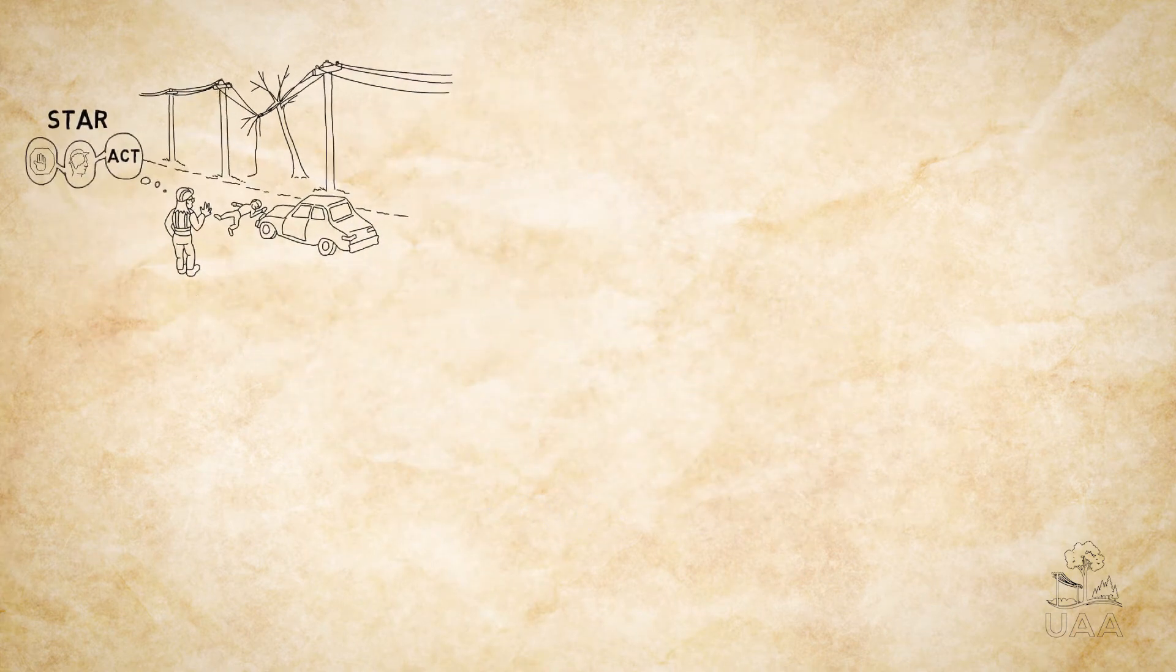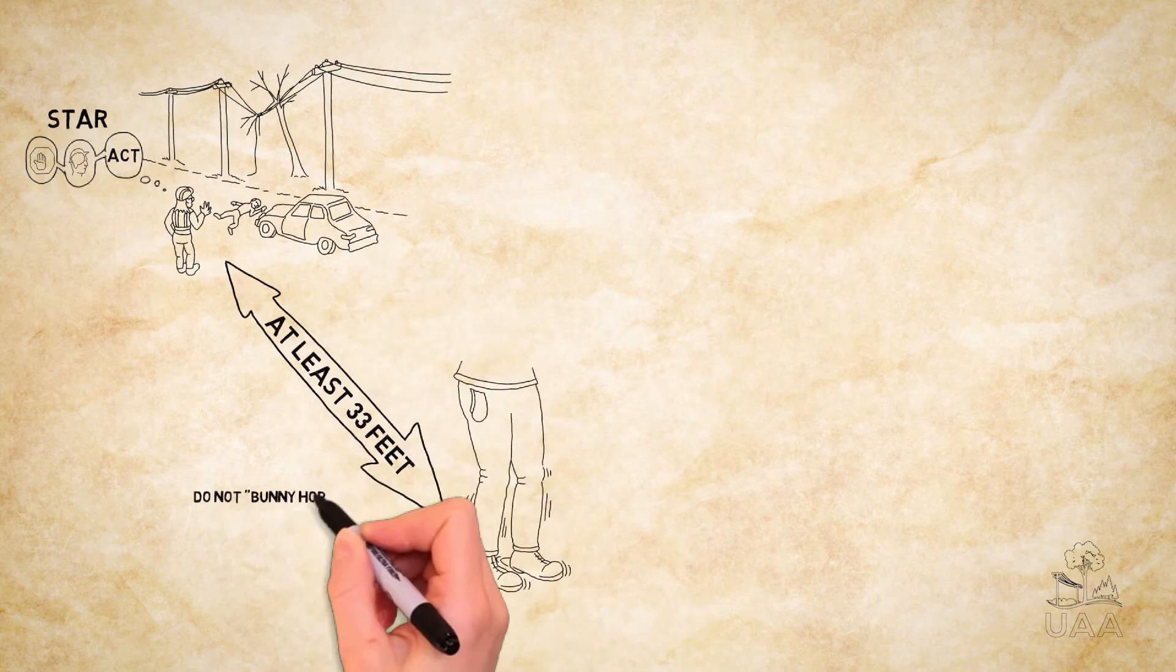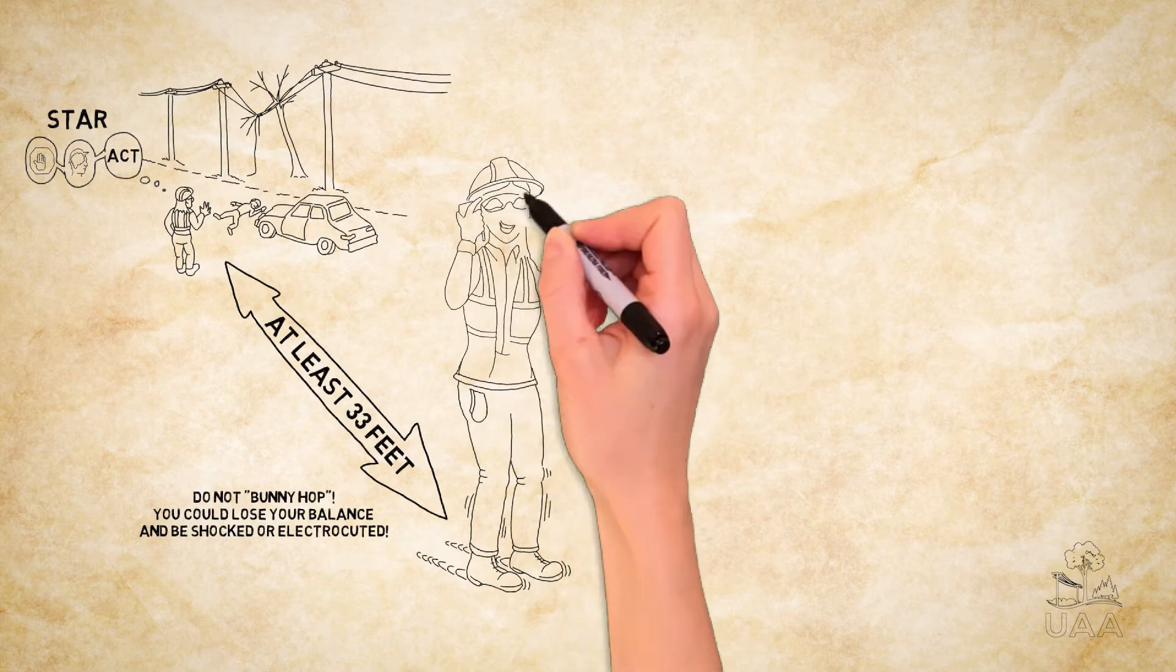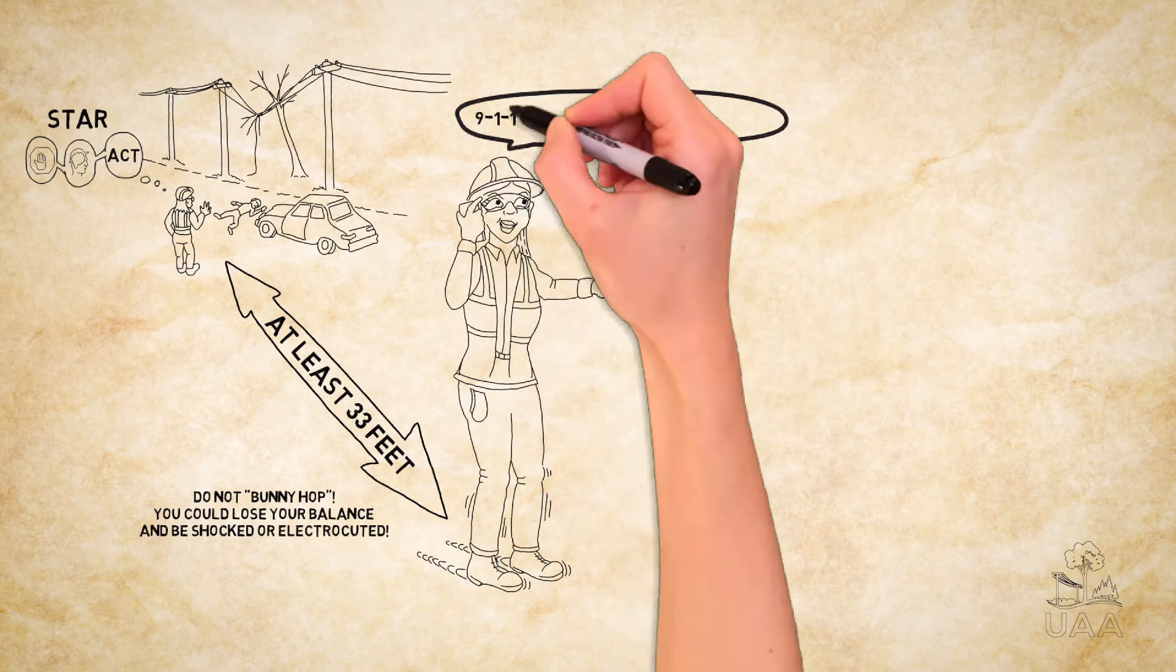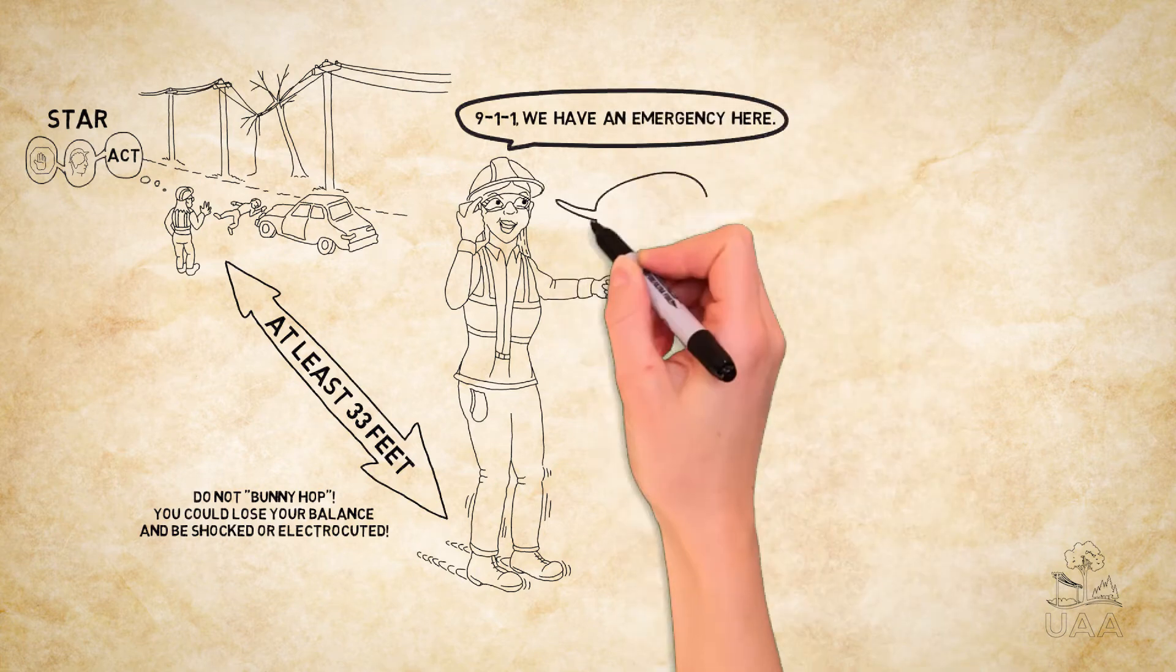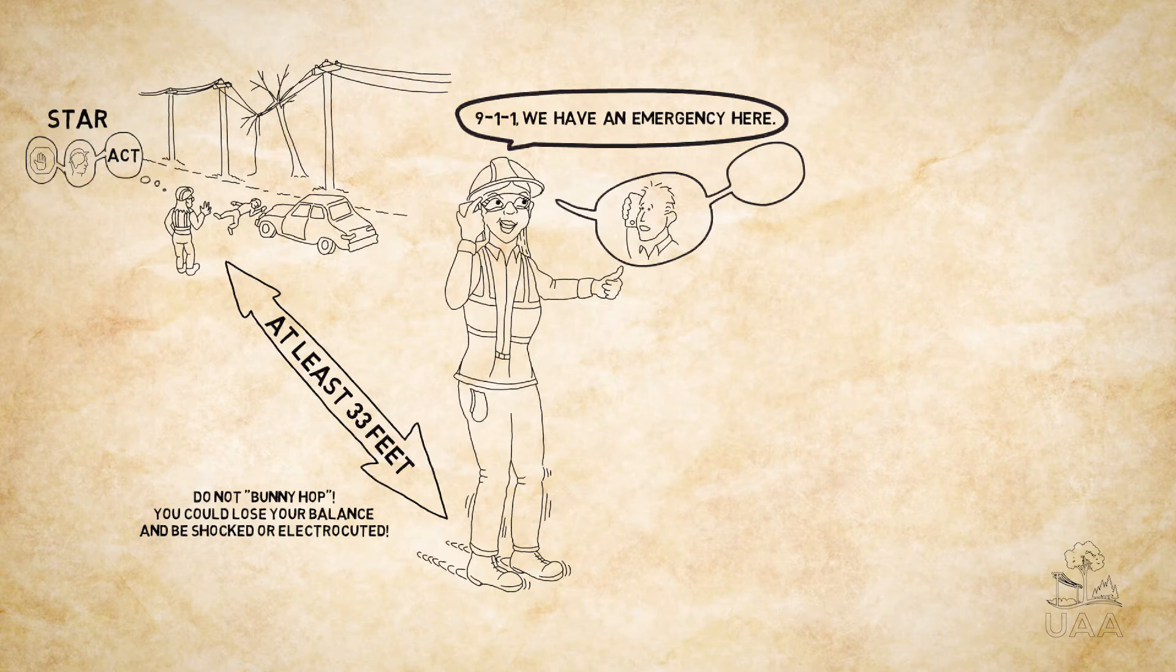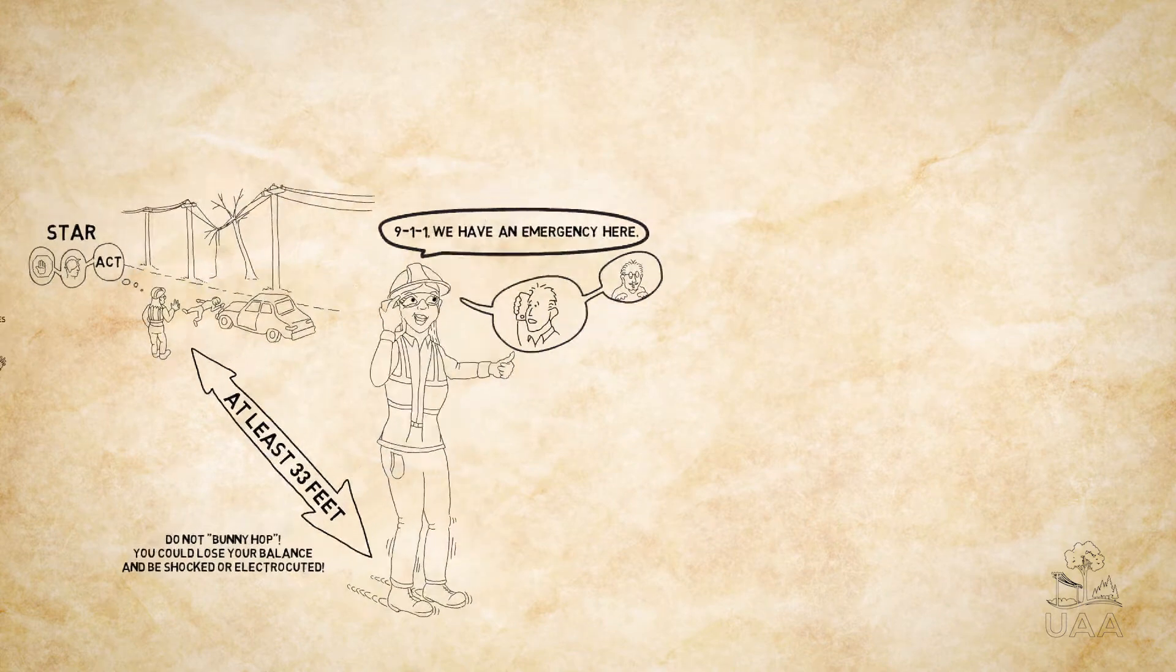Act. To escape injury, Carmen shuffles her feet together until she is sure to be more than 33 feet away. She then dials 911 to report an injured person and a potential electrical hazard from a downed power line. Next, Carmen knows to contact the utility system owner or operator to inform them of the potentially dangerous situation, and she remembers to inform her employer too.